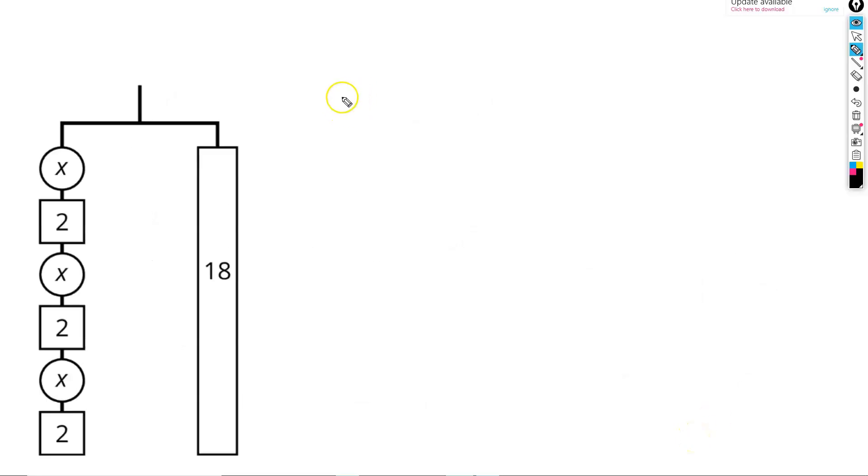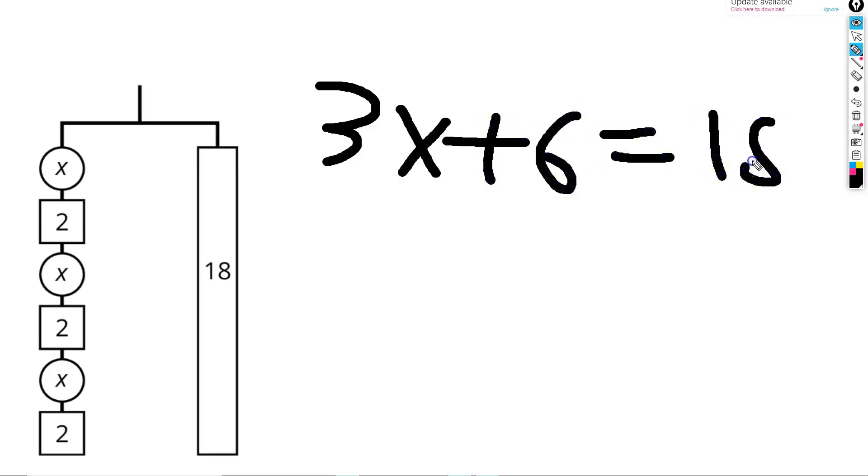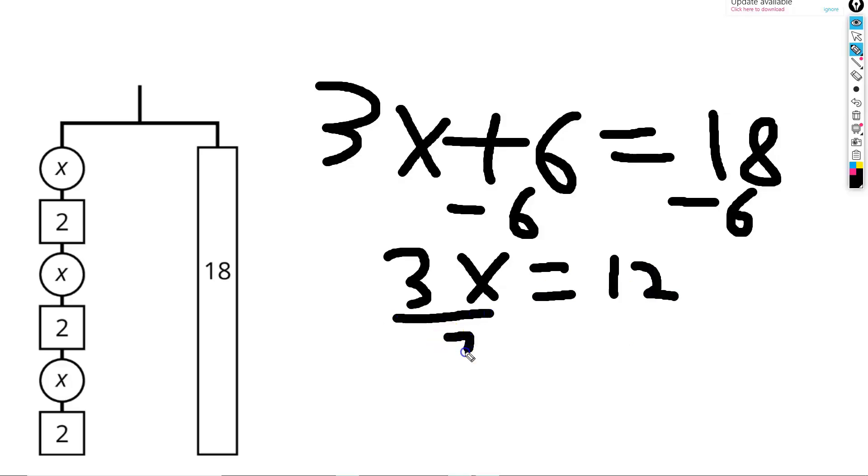If we're given this hanger diagram, we could write it as the equation 3x plus 6 equals 18, and then solve it the same way we did the last one. We would subtract 6 from both sides, getting 3x equals 12, and then divide each side by 3, getting x equals 4.